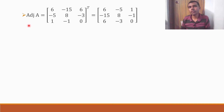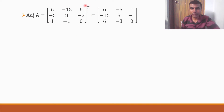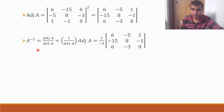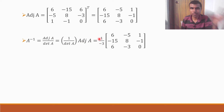We got the cofactor matrix. Now we are going to find adjoint A, which is nothing but the transpose of the cofactor matrix. Columns become rows: the first column [6, −5, 1] becomes the first row, and so on. So adj(A) = [6, −5, 1; −15, 8, −1; 6, −3, 0]. Then A⁻¹ = adj(A) / det(A) = (1/−3) × adj(A). The determinant was −3, so A⁻¹ = (1/−3) × [6, −5, 1; −15, 8, −1; 6, −3, 0].